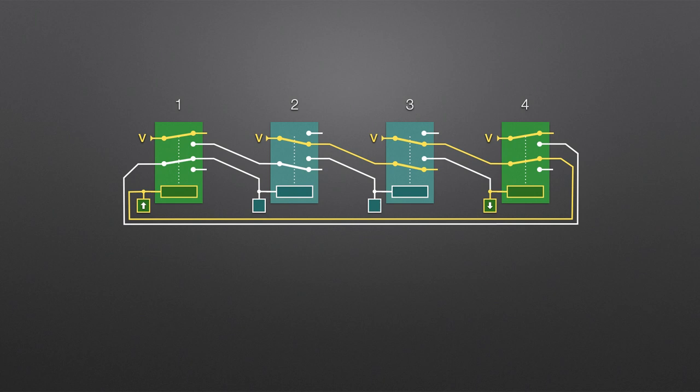Likewise, again, when relay three turns off, relay one receives power, and relay four is running off its capacitor.